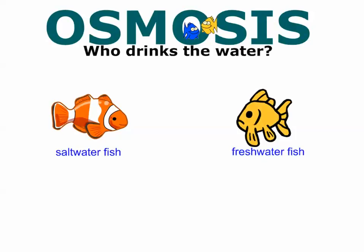Let's take a look at an example related to osmosis — saltwater fish, made famous by Finding Nemo. Here you have a clownfish and a regular freshwater fish like a goldfish. So, who actually drinks water? Saltwater fish versus freshwater fish — only one of these types actually drinks the water they swim in. Pause the video and try to figure it out.